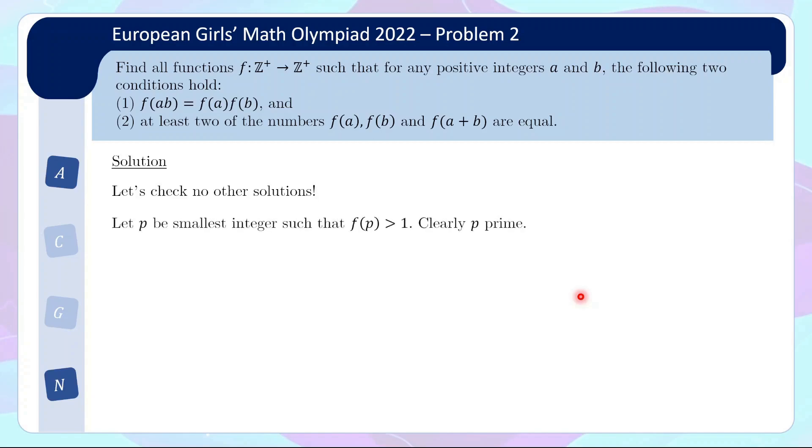Now, firstly, obviously, if all the f(n) equals 1, we got our solution. So let's suppose that there is an integer that is bigger than 1. Let p be the smallest such integer such that f(p) is bigger than 1. Now clearly, p is prime because if it's composite, we can break the composite out into two smaller factors. But we saw that all the smaller numbers are equal to 1. So that would be a contradiction. So the smallest such case must have p being a prime.